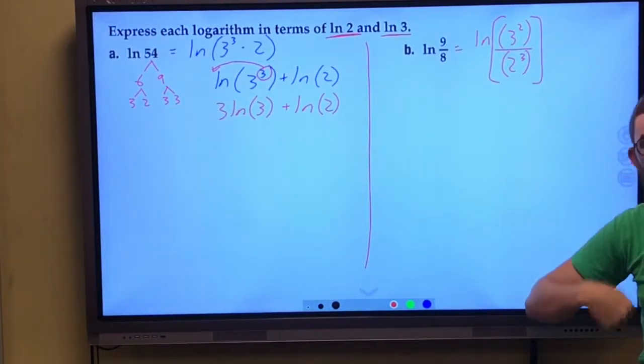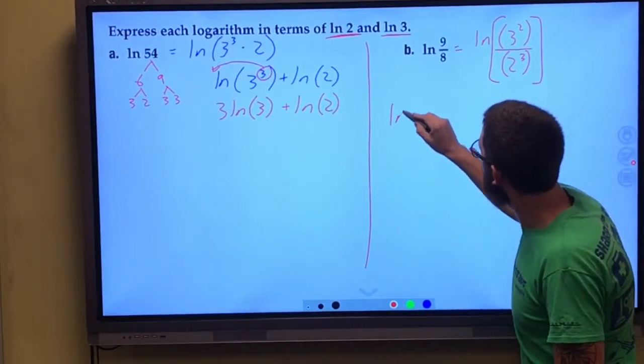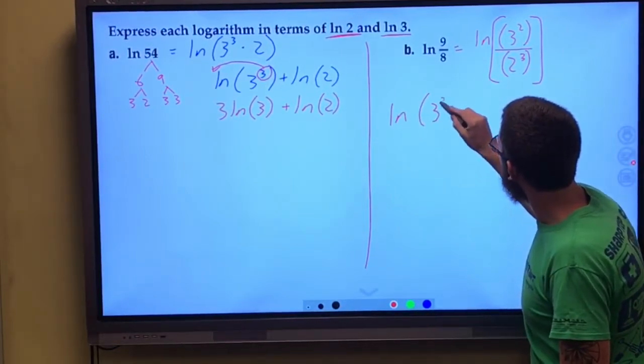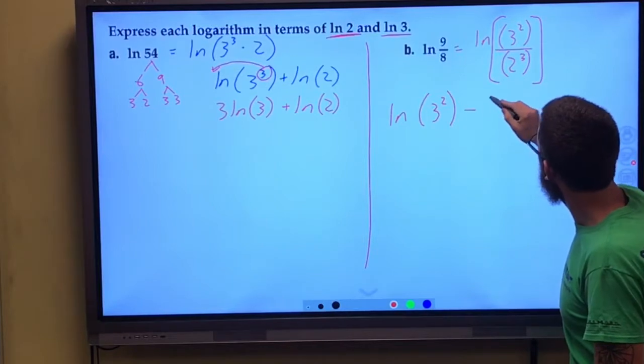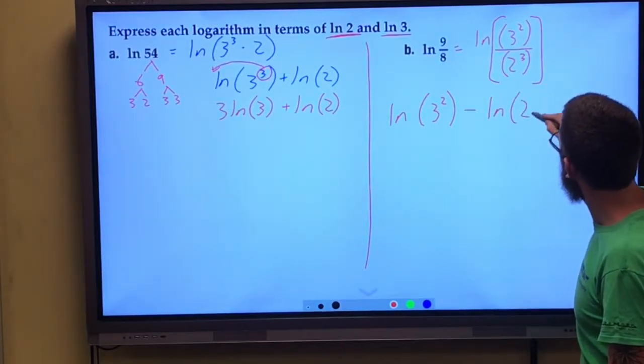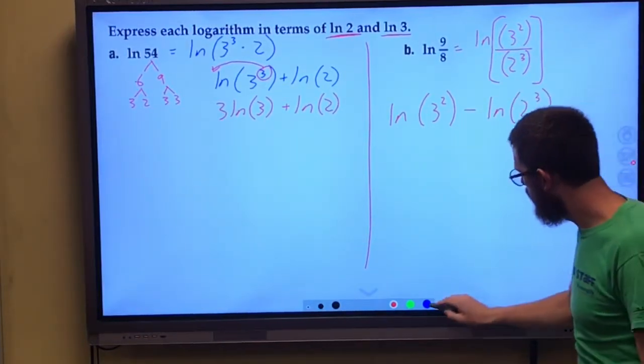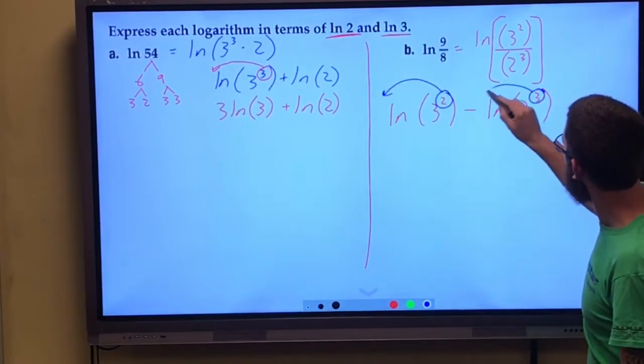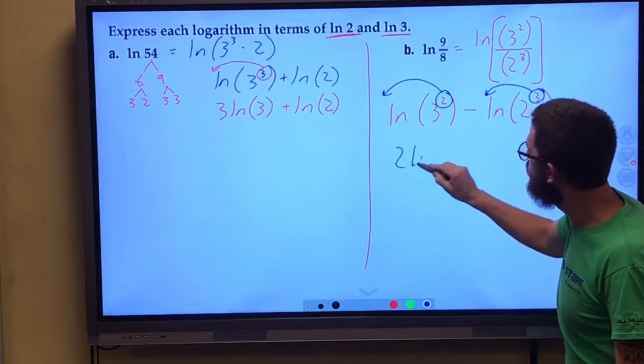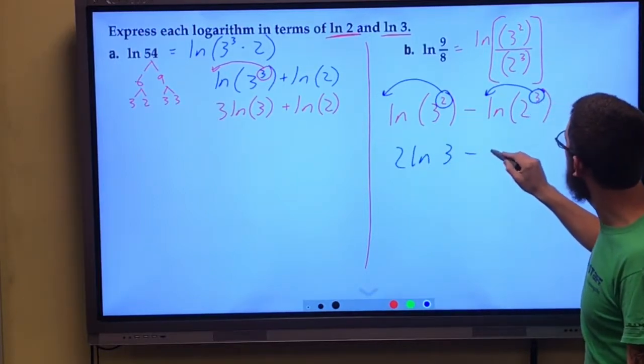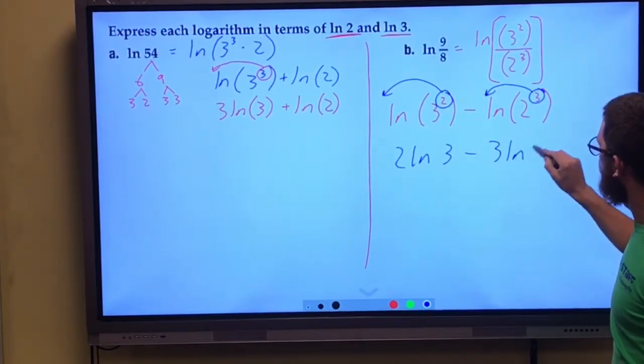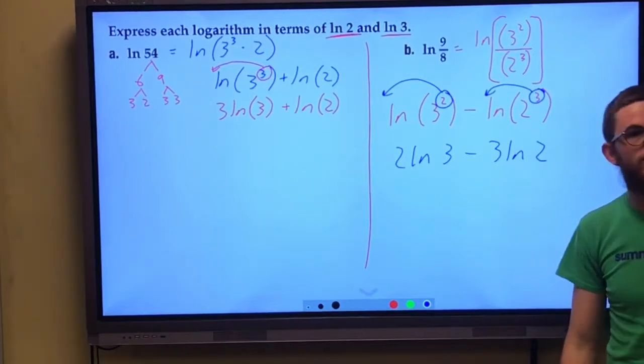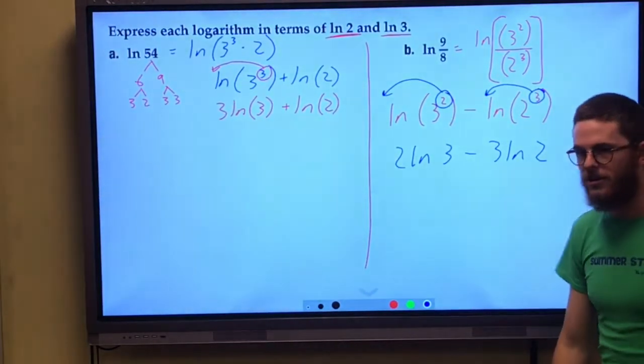Notice it's division. I'm going to use my quotient property. This is natural log of 3 squared minus natural log of 2 cubed. Power rule on both of these things to bring the exponents out to the front. This is 2 natural log of 3 minus 3 natural log of 2. And just like that, we've completed another one.